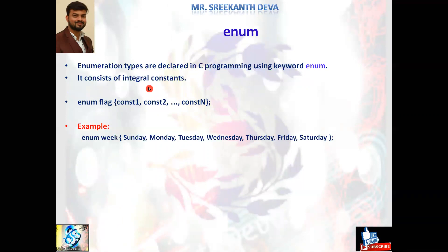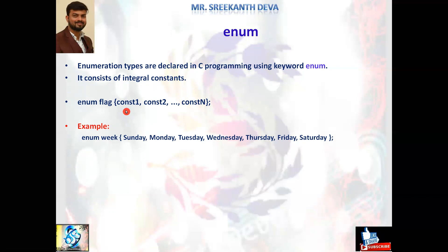Enumeration types are declared in C programming using the enum keyword. It consists of integral constants — a group of integral constants represented using enum. The syntax is: enum enum_name { constant1, constant2, ..., constantN }. We will discuss this through example programs with explanation and execution in coming sessions.